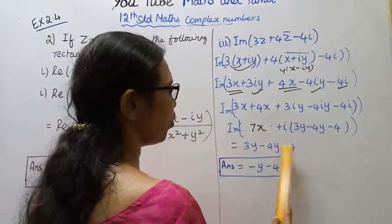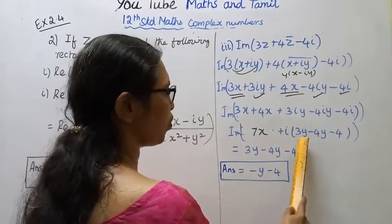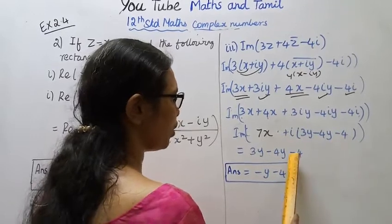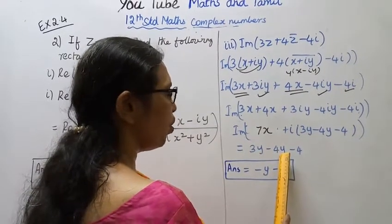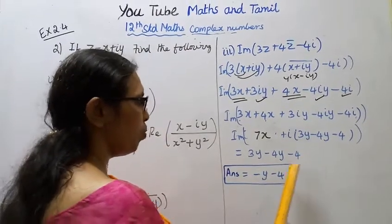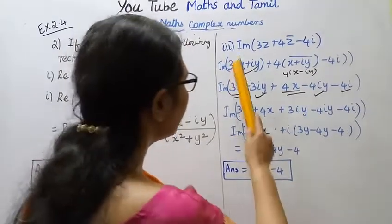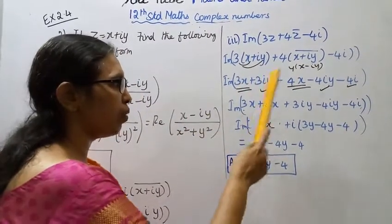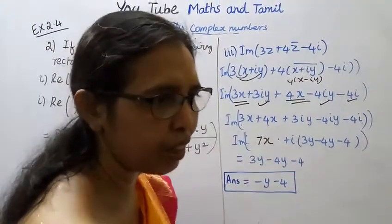The imaginary part is 3y minus 4y minus 4, which equals minus y minus 4.